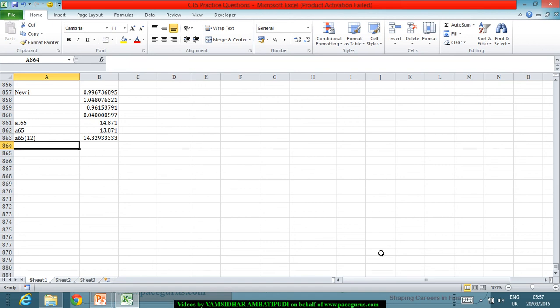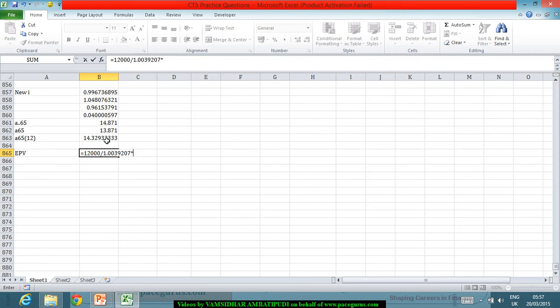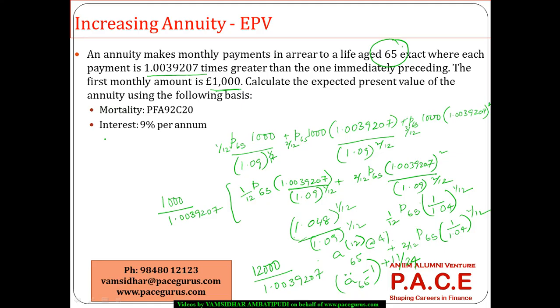Now I can very well operate out using this formula. So expected present value for me comes out as 12,000 divided by 1.0039207 times A65. A65 is 14.329, giving 171,280, being the expected present value of this annuity whose payments are increasing by a certain amount every period. Thank you.